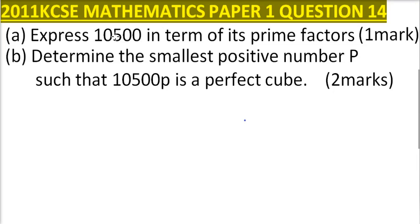2011 KCSE Mathematics Paper 1 Question 14. Part A: Express 10,500 in terms of its prime factors. Part B: Determine the smallest positive number P such that 10,500 multiplied by P is a perfect cube. So for us to do this, we start with Part A.